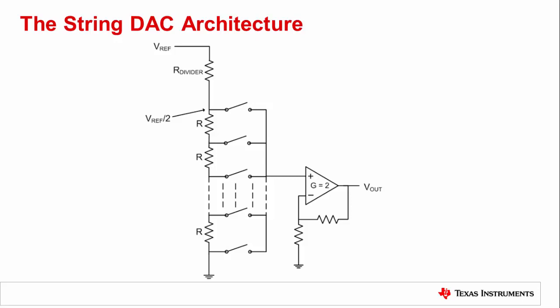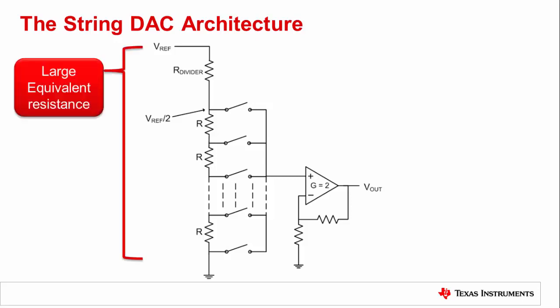The first item of note concerning the string DAC is that the input impedance looking in from the reference node remains static, except for during a code transition. Other architectures will have dynamic input impedances in addition to the instantaneous impedance change during a code transition. In general, all references should be unbuffered, but the string DAC is more forgiving for unbuffered references.